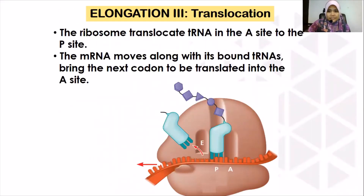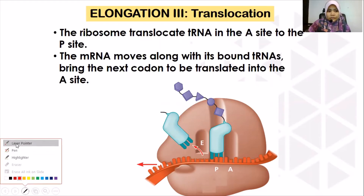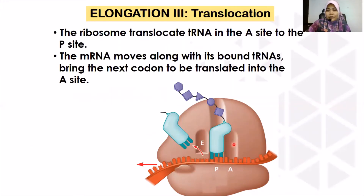In translocation, the third step in elongation, the ribosome translocates the tRNA from the A site to the P site. The tRNA holding the growing polypeptide chain, which is now in the A site after peptide bond formation, moves to the P site. Dalam proses translocation ini, ribosome akan memindahkan tRNA daripada A site pergi ke P site. Manakala tRNA yang ada dekat P site pula akan translocate to the E site and will be released.